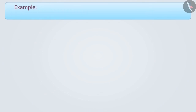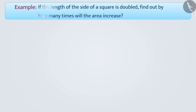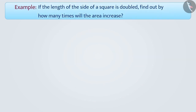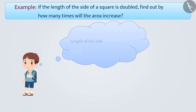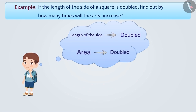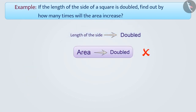Next example: if the length of the side of a square is doubled, find out by how many times the area will increase. Many times we answer such questions without thinking. Some students believe that since the length of the side is doubled, the area will also be doubled. But this is a wrong notion.